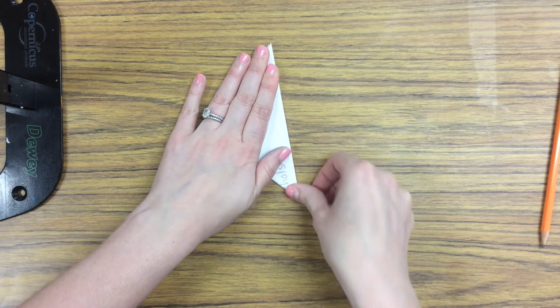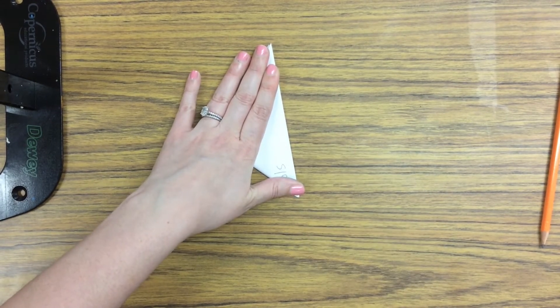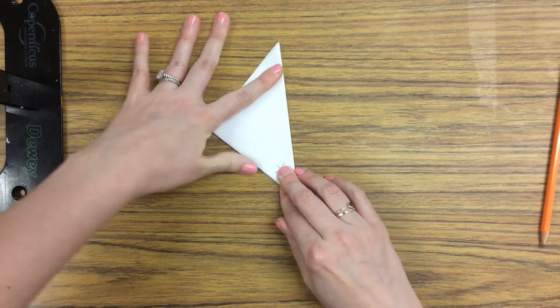Press the crease, and when we open up, you should have eight sections on your paper.